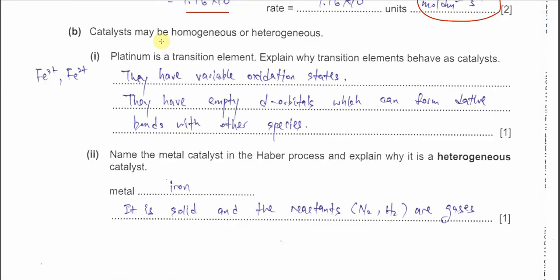Part B: catalysts may be homogeneous or heterogeneous. Homogeneous means the catalyst is in the same phase as the reactants; heterogeneous means a different phase. Part B1: platinum is a transition element — explain why transition elements behave as catalysts. An example is iron(III) and iron(II), which are used in the homogeneous catalysis of iodide and peroxodisulfate. For a full explanation of that catalysis, refer back to Paper 4.1.